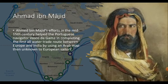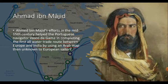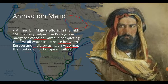Ahmad Ibn Majid's efforts in the mid-15th century helped the Portuguese navigator Vasco da Gama complete the first all-water trade route between Europe and India, by using an Arab map unknown to European sailors. Ahmad Ibn Majid was an Arabian merchant who lived in Saudi Arabia and was a trader of spices with India. He helped Vasco da Gama navigate the route.